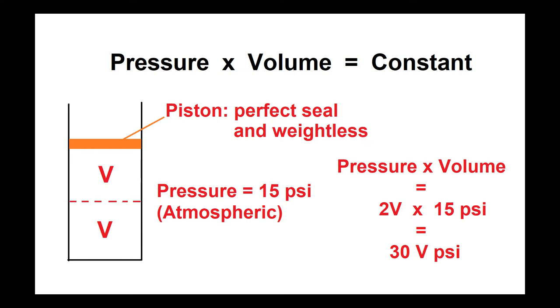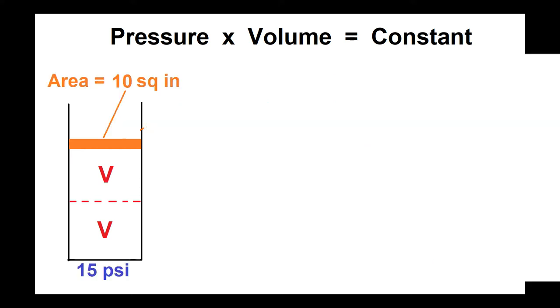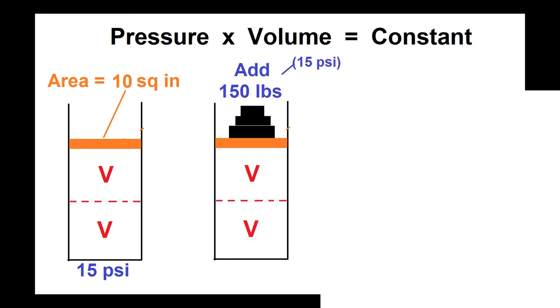We don't actually need to say what V is, that's just a placeholder for a number. Now suppose the piston's surface area is 10 square inches and everything is at 15 PSI both inside and outside of the cylinder. Then we add 150 pounds on top of the piston.